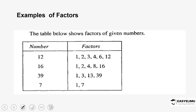We have examples of factors — the table below shows factors of given numbers. For 12, you can see all the factors. Start from 1: 1 times what equals 12? So 1 and 12. Then go to 2 — remember from our divisibility test — 2 times what equals 12? That's 2 times 6. Then 3: 3 times what gives 12? That's 3 times 4. This is how you systematically get the factors.